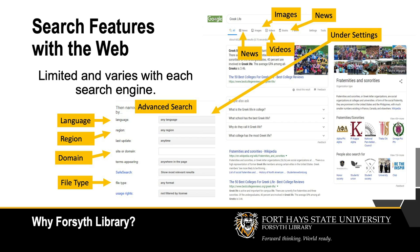Search features on the web are limited and vary with each search engine. You might be able to choose videos, news, or images. They might have an advanced search to choose domains like .com, .edu, .org, or document types like PDF, Doc, or JPEG.